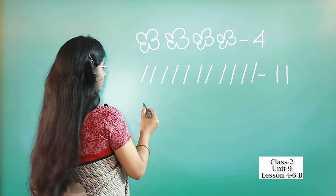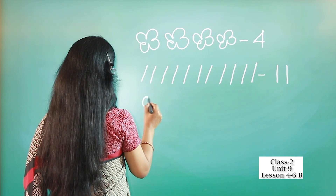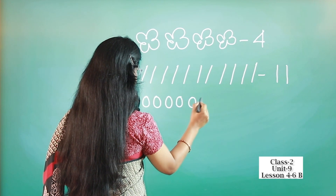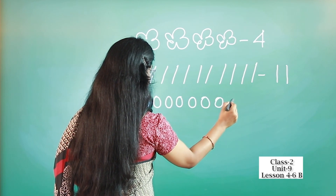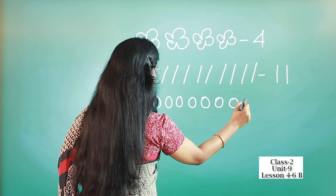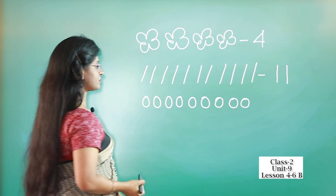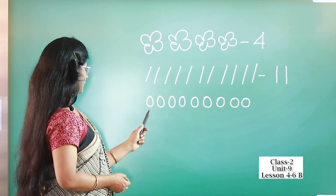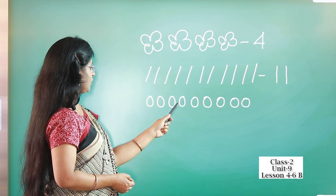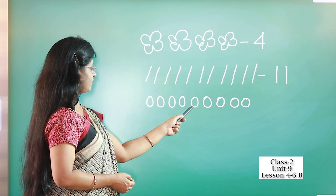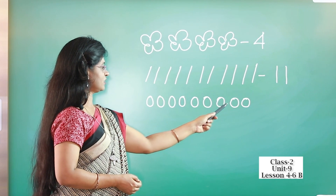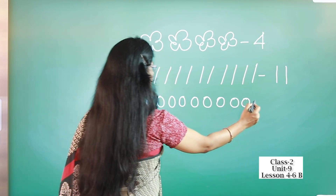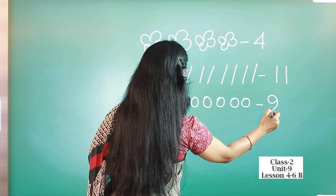Now I'm going to draw some circles. How many circles are there? One, two, three, four, five, six, seven, eight, nine — nine circles. You have to write 9 in your notebook.